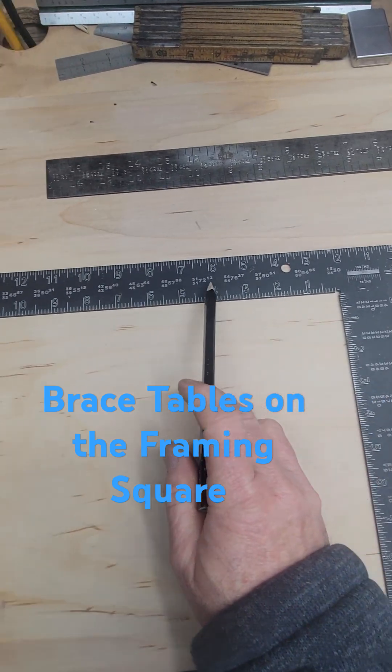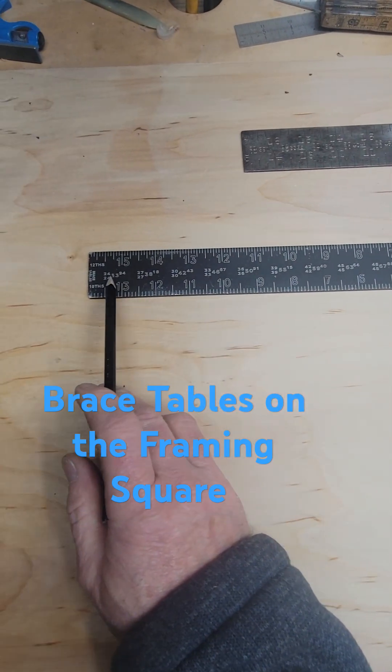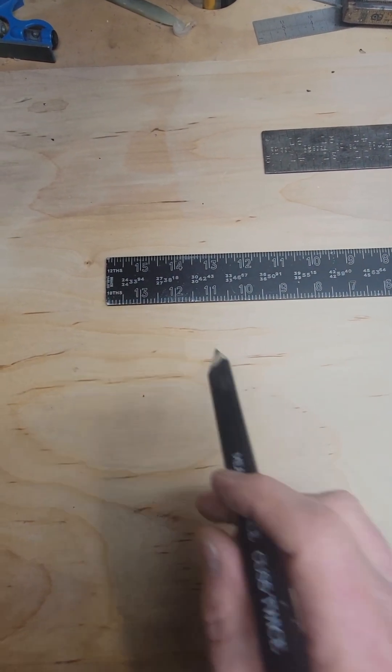So on the tongue side of your framing square, you're going to have a brace table right here. Let's look at it a little bit closer.